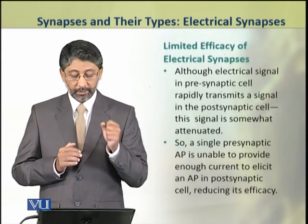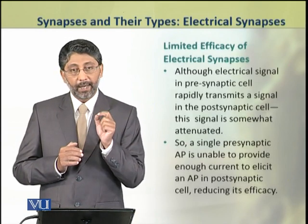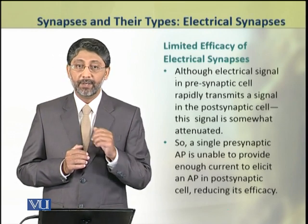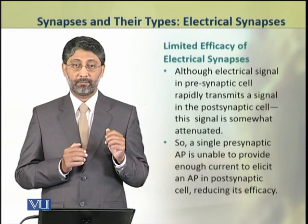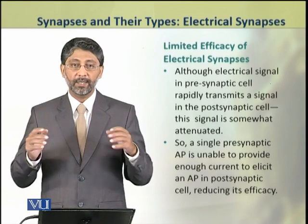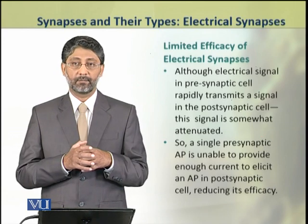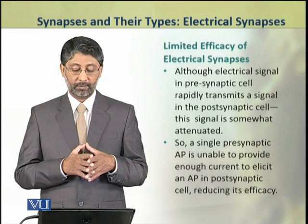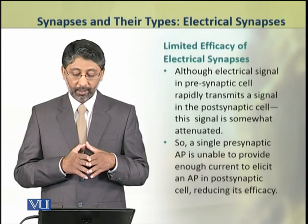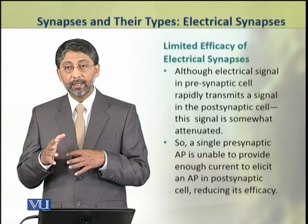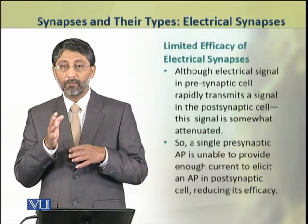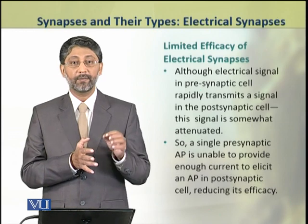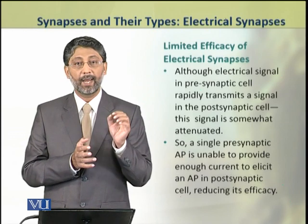Dear students, electrical synapses provide a means of very rapid transmission without involving any chemical intermediary. However, they have limited efficacy because the signal transferred from one neuron to the other through the gap junction proteins is somewhat attenuated.